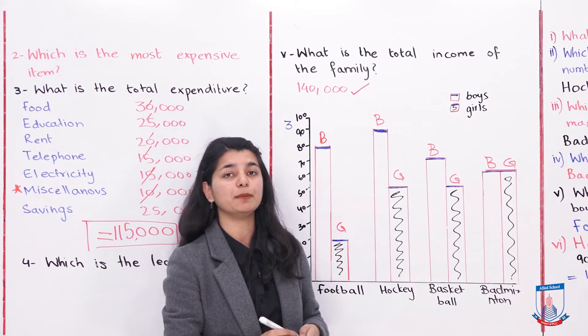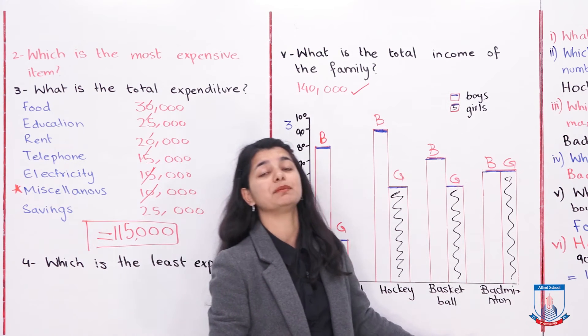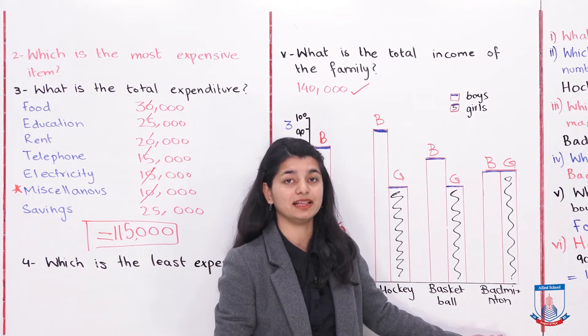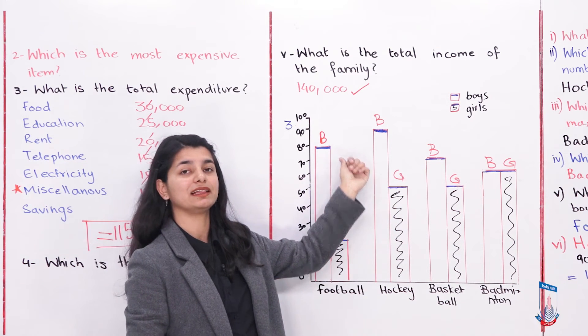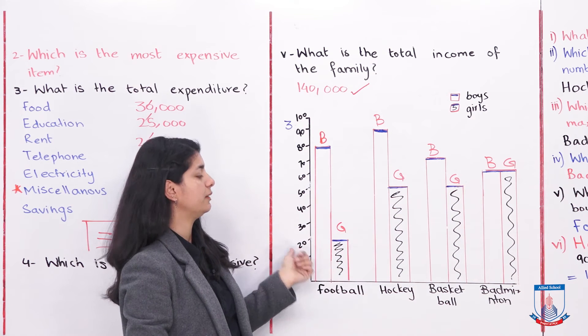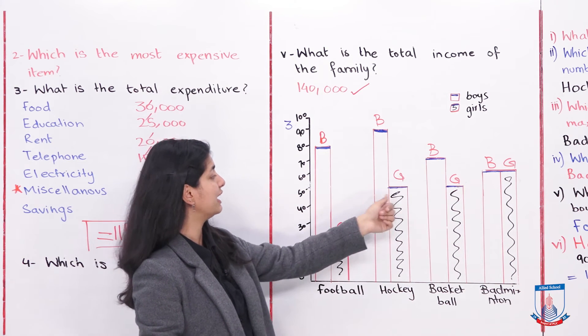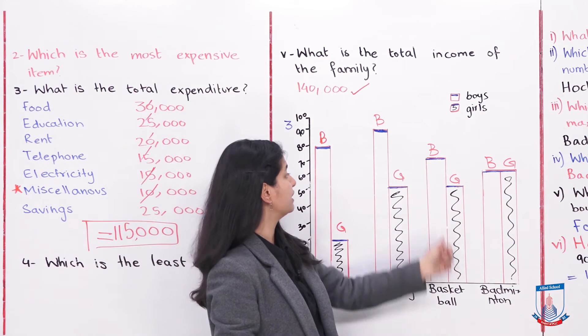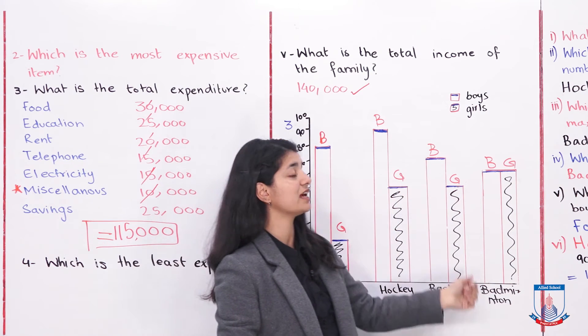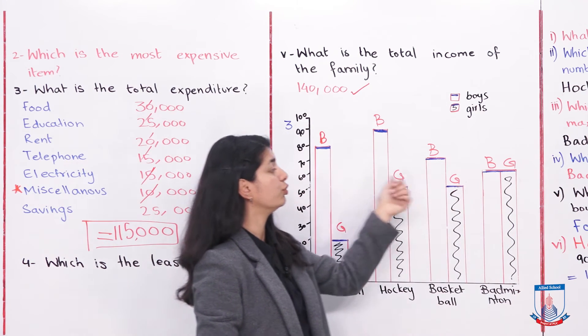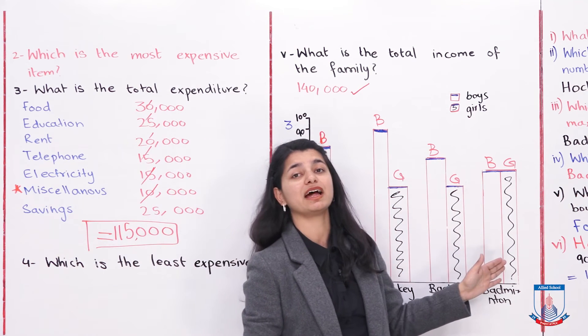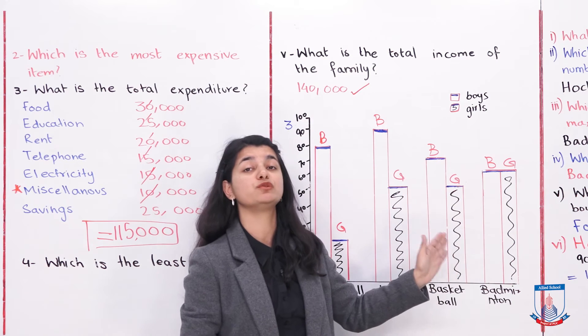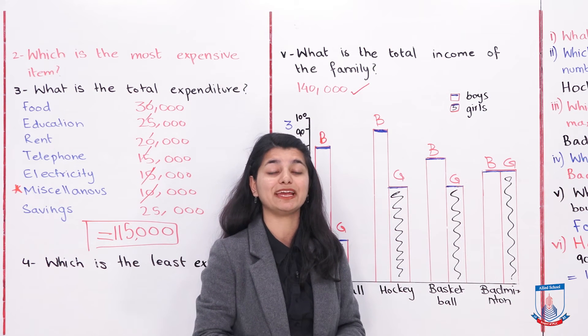Now they will ask you a question about this. Which sport, which child, which girl? So football, boys play 80 but girls just 20. Hockey, 90 boys, girls just 50. Basketball, 70 boys, girls 50. Badminton, both boys and girls play 60 to 60 in numbers. This is how we tell them all the number of students which are engaged in different sports.